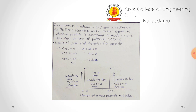The particle is not allowed to cross this barrier area. To understand this with an example, consider a proton in a nucleus. The proton is a particle confined within the nucleus diameter boundary. The proton is not allowed to cross the boundaries of the nucleus.